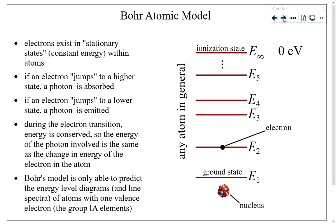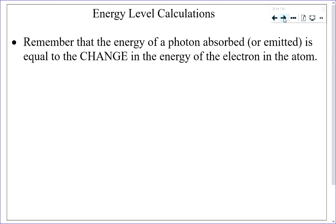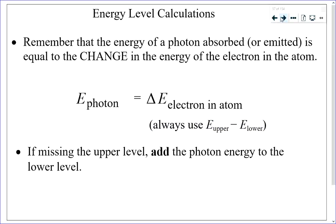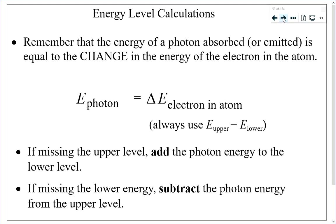We use the Bohr model to calculate photon energies or wavelengths. The energy of the photon absorbed or emitted equals the energy change of the electron: E photon equals delta E of the electron, which means upper energy level minus lower energy level. Unlike elsewhere in the course, you always use upper minus lower, not final minus initial. If you're missing an upper level, add the photon energy to the lower level; if you're missing the lower level, subtract the photon energy from the upper level.